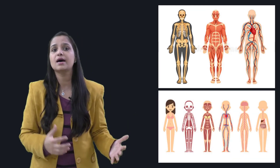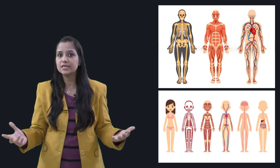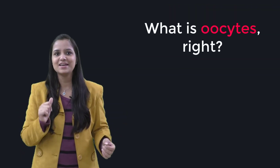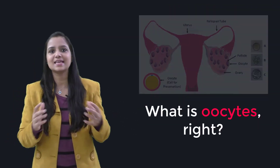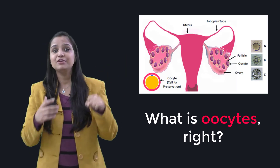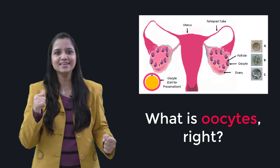A man who is healthy and sexually mature continuously produces sperm. On the other hand, the development of a woman's egg is arrested during fetal development — meaning she is born with a predetermined number of oocytes and cannot produce new ones. An oocyte is a cell in an ovary which may undergo meiotic division to form an ovum.